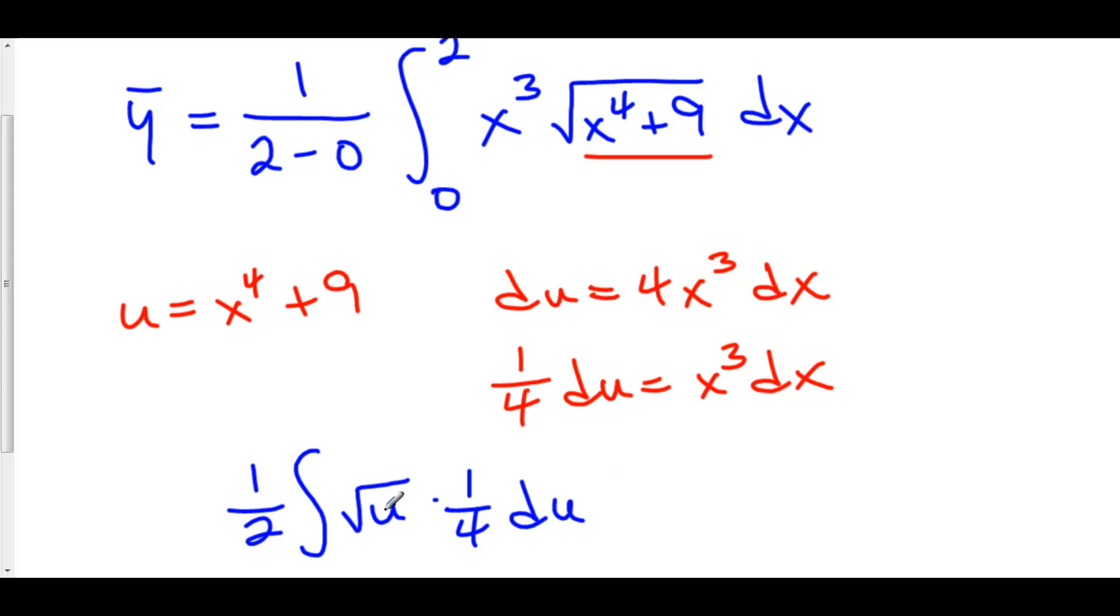Now, I'm integrating on the u axis and not the x axis. So that means that I have to change my limits of integration from x to u. To do that, I just plug in these values into my relation u to x. So I'll plug 0 into x. 0 plus 9 is 9. And I'll plug 2 into x. 2 to the 4th is 16 plus 9 is 25.